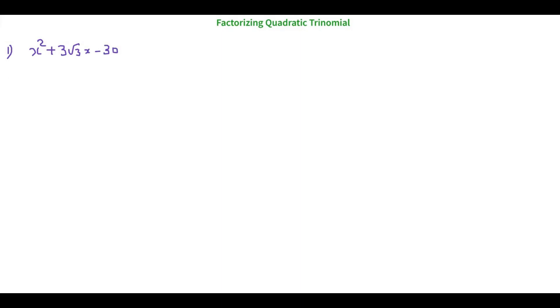When you see this question you feel it is a little tricky because there is a √3 in the middle and how are we going to split √3? So it is the same as the previous ones which we have already done. When we add or subtract two numbers we have to get 3√3, that is positive 3√3, and when we multiply two numbers we need to get negative 30. We need to get 3√3.